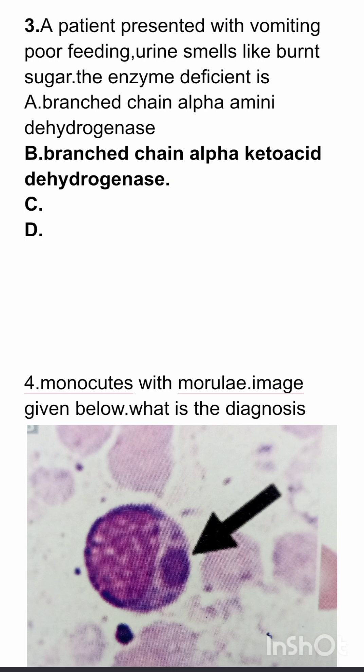A patient presented with vomiting, poor feeding, and urine that smells like burnt sugar. The enzyme deficient is — options given are branched chain alpha amino dehydrogenase, branched chain alpha keto acid dehydrogenase, and some other options. The answer here is branched chain alpha keto acid dehydrogenase.